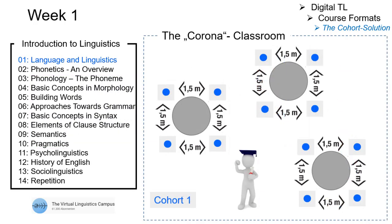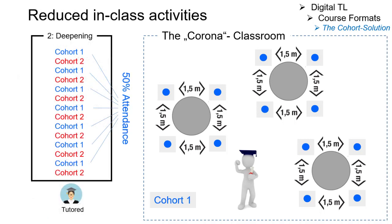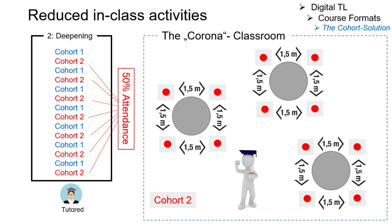Week 1: cohort 1. Week 2: cohort 2. Week 3 again: cohort 1, and so on. For the course participants, this means 50% instead of 100% attendance. For the course instructors, this means no change in teaching load — just a precise focusing on changing target groups.